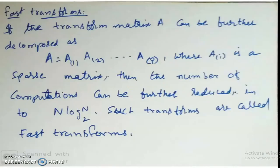The next topic is fast transforms. If the transform matrix A can be further decomposed as A = A1·A2·...·Ai, where each Ai is a sparse matrix, the number of computations can be reduced from O(N²) to O(N log₂ N). Such transforms are called fast transforms. We have seen an example in digital signal processing: the Fast Fourier Transform.